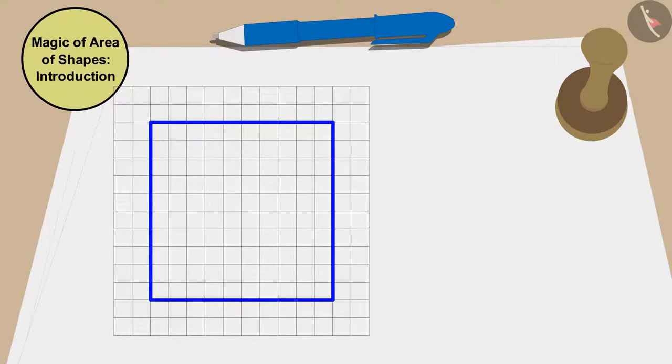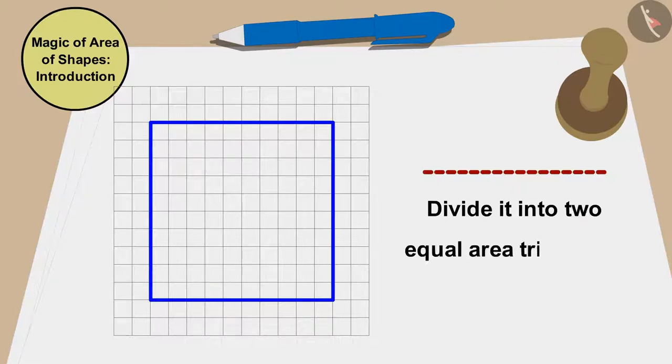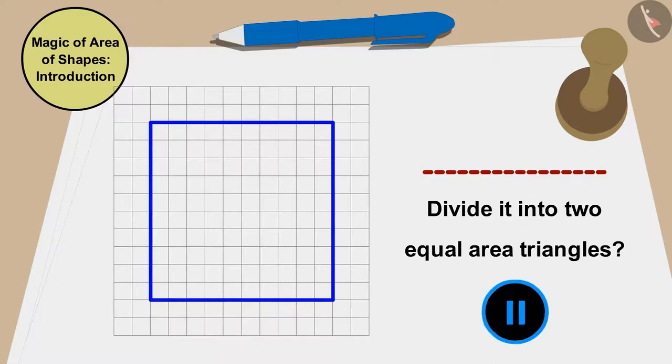Children, can you divide the shape of this cashew barfi by just drawing a straight line and somehow divide it into two equal area triangles? You can find a solution by stopping the video.